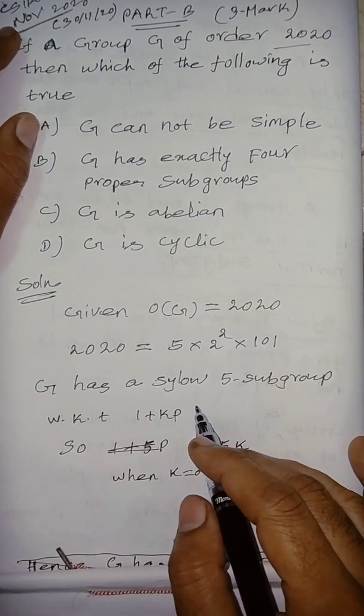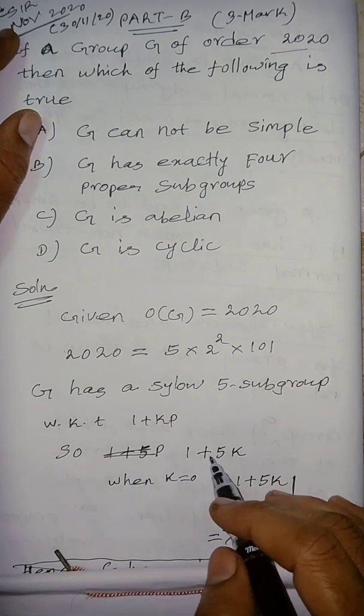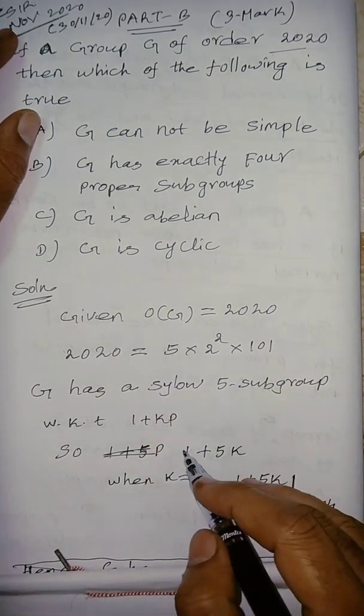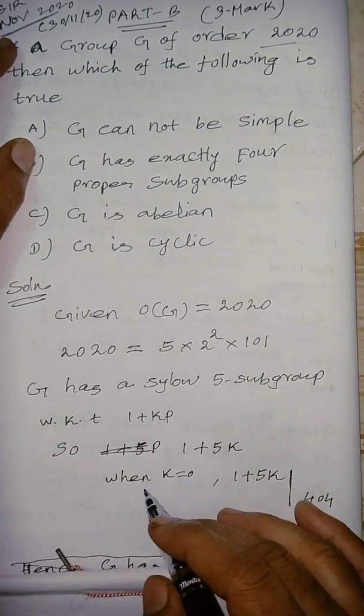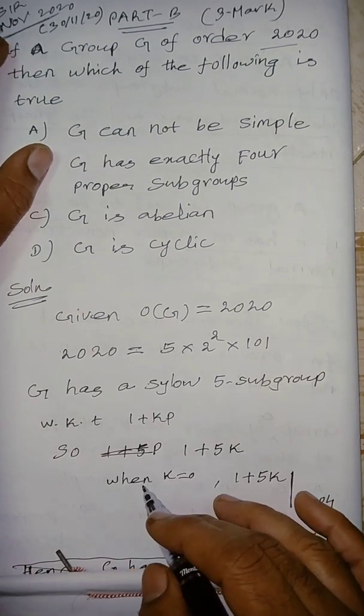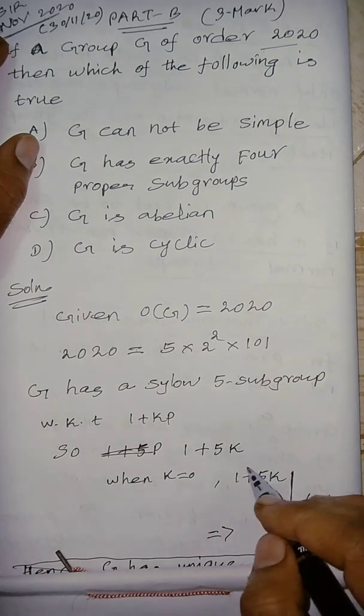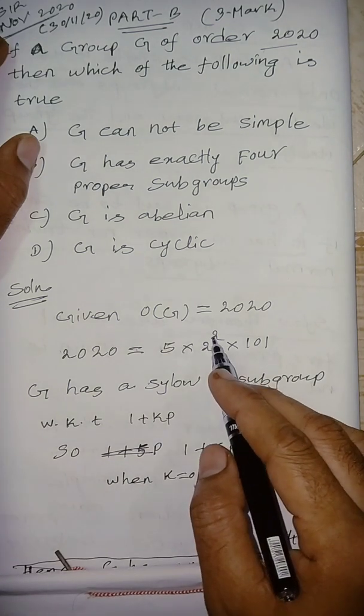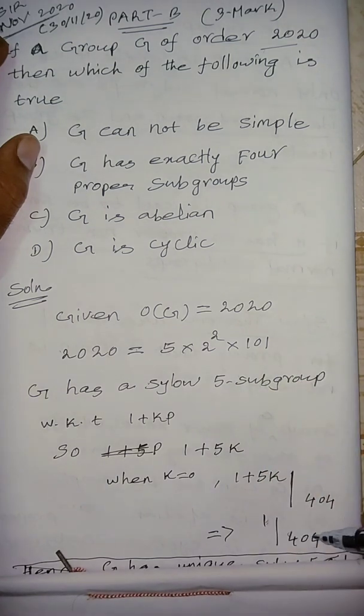We know this theorem 1+kp. Everyone has studied well in MSc mathematics. So 1+5k, where prime is 5. So p for k - when k=0, this becomes 1, so 1 divides 404, that is 2² × 101. We are getting 404.